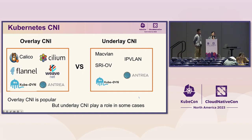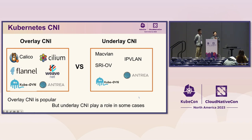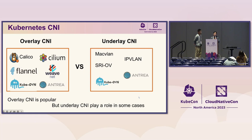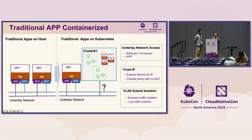Let's take a look at the CNIs currently available in Kubernetes. We're going to categorize these CNIs into two types: underlay CNI and overlay CNI. Overlay CNI is more popular than underlay CNI — for example, the widely used Calico and Cilium with eBPF acceleration capabilities. Overlay CNI has a lower dependency on the underlay physical network and it's easy to use. However, in some scenarios, underlay CNI cannot be replaced.